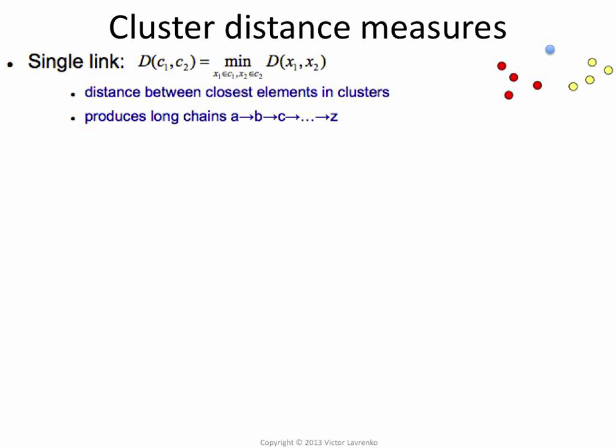Single link says that if I have, so in this picture I have three clusters. I have a red cluster, the yellow cluster, and the blue cluster. It just happens to be a very small blue cluster. If I'm measuring the distance between red and yellow, in single link clustering, the way I do that is I look for two points such that one point is in red, another point is in yellow, and they're as close to each other as they can be. So I look for two closest points where one point is in one cluster, another point is in another cluster.